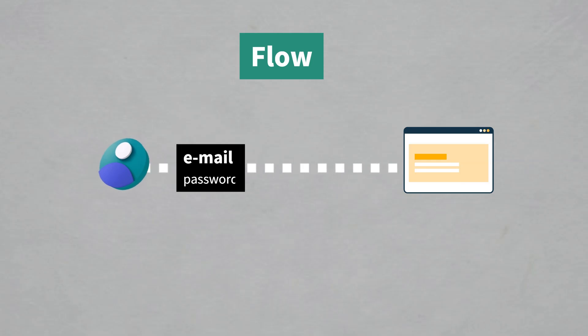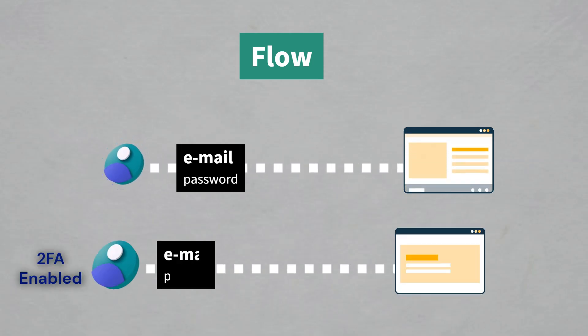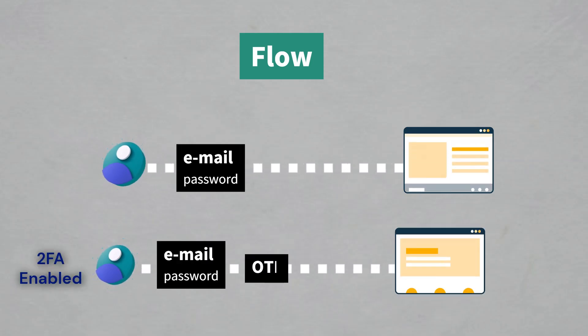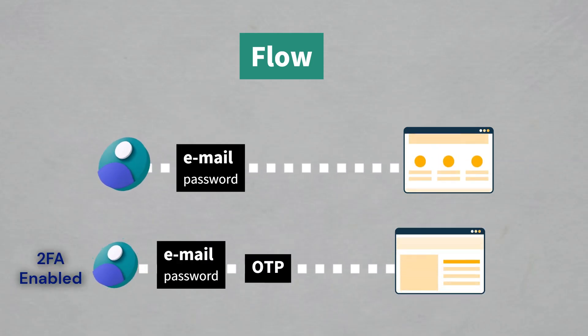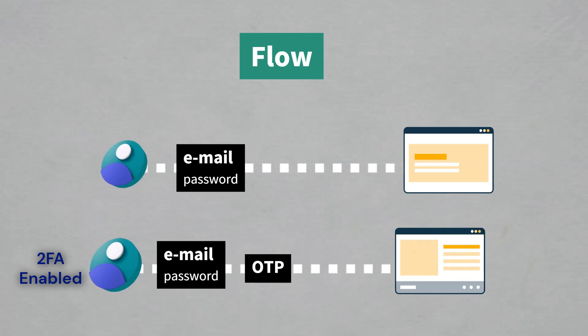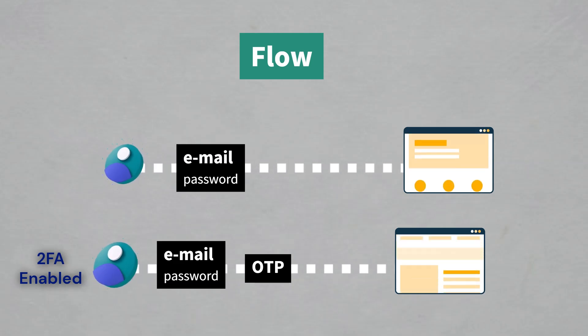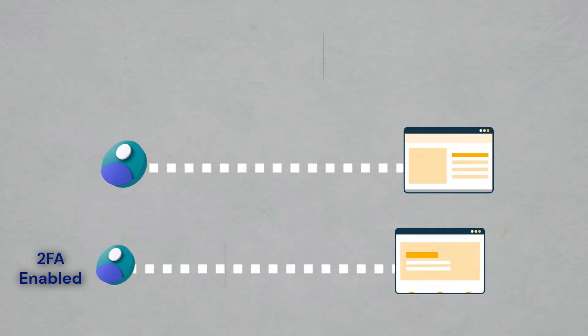Let's see how the flow will work. First, the user logs in with their email and password. If the user has 2FA enabled, then the user will be prompted to enter an OTP from their Authenticator app.